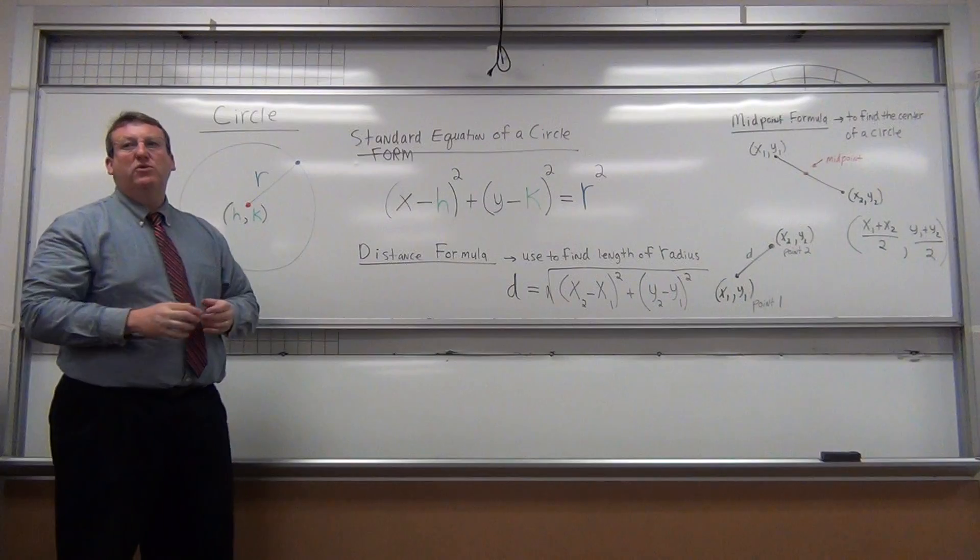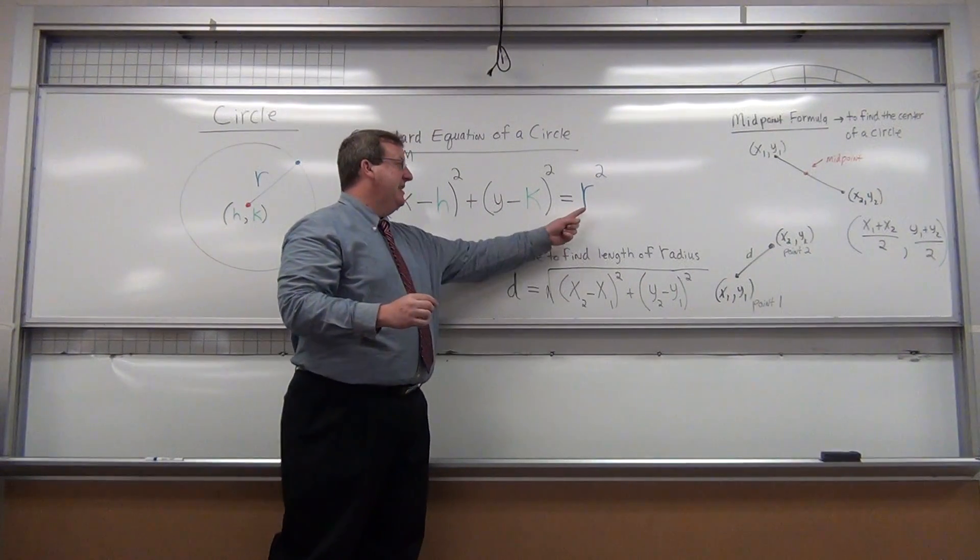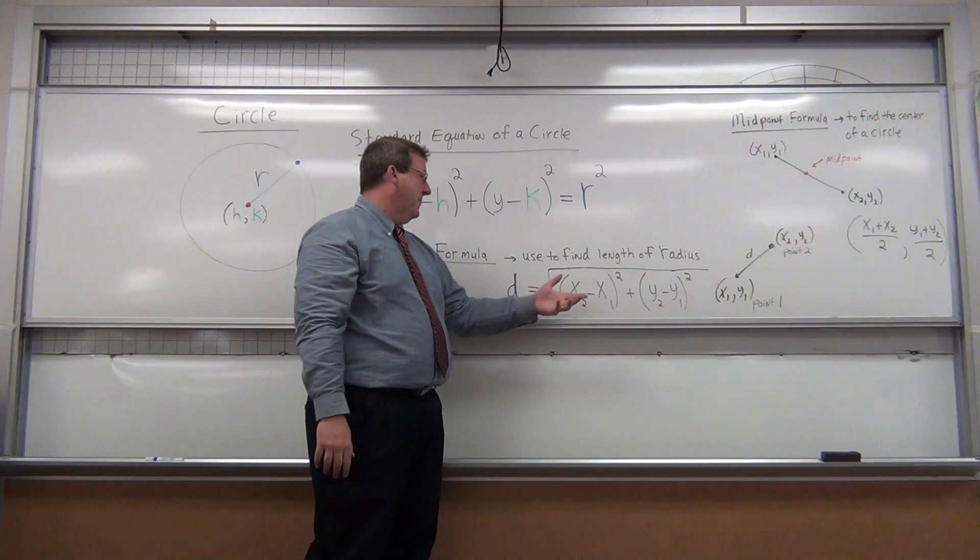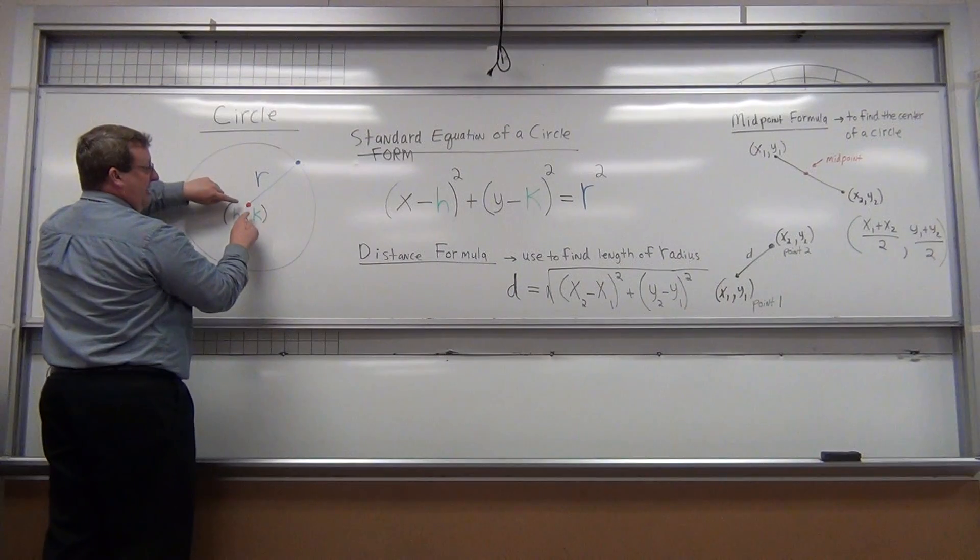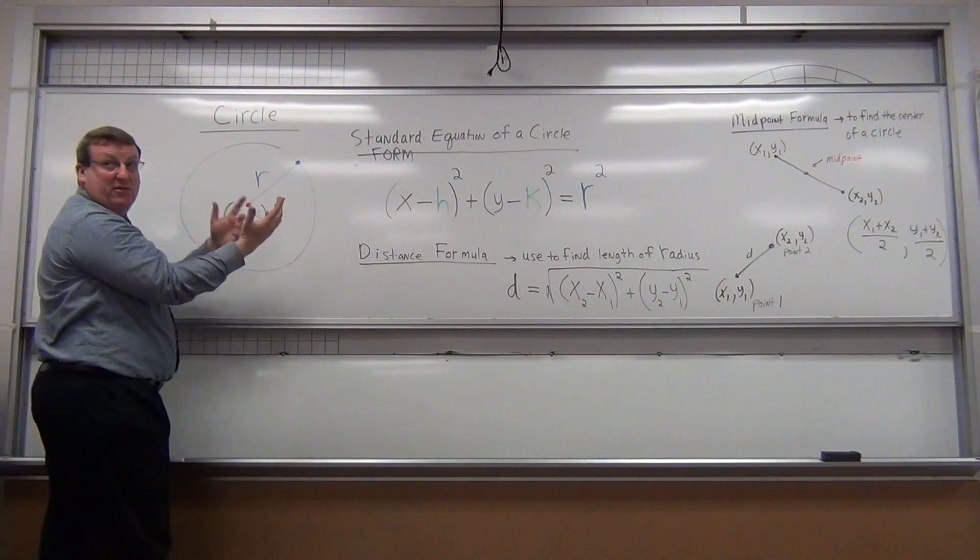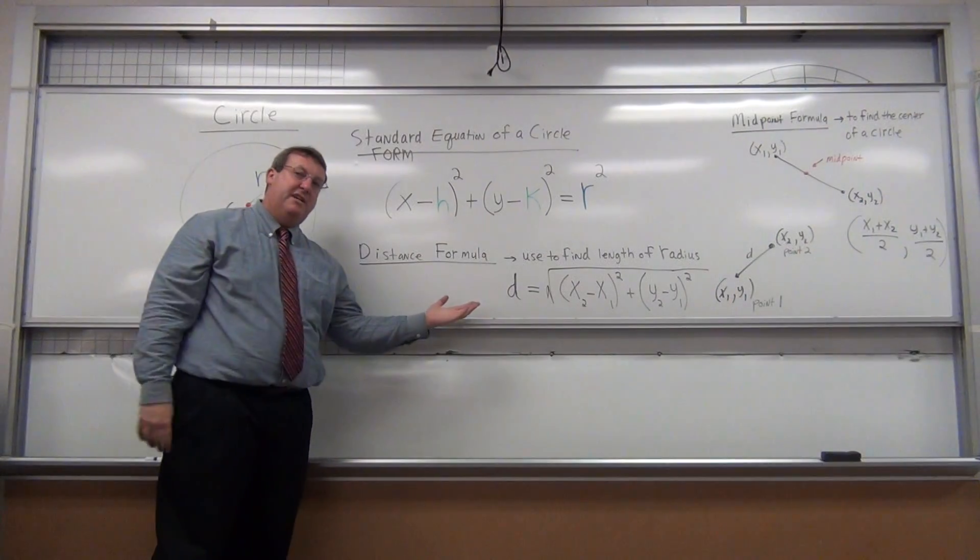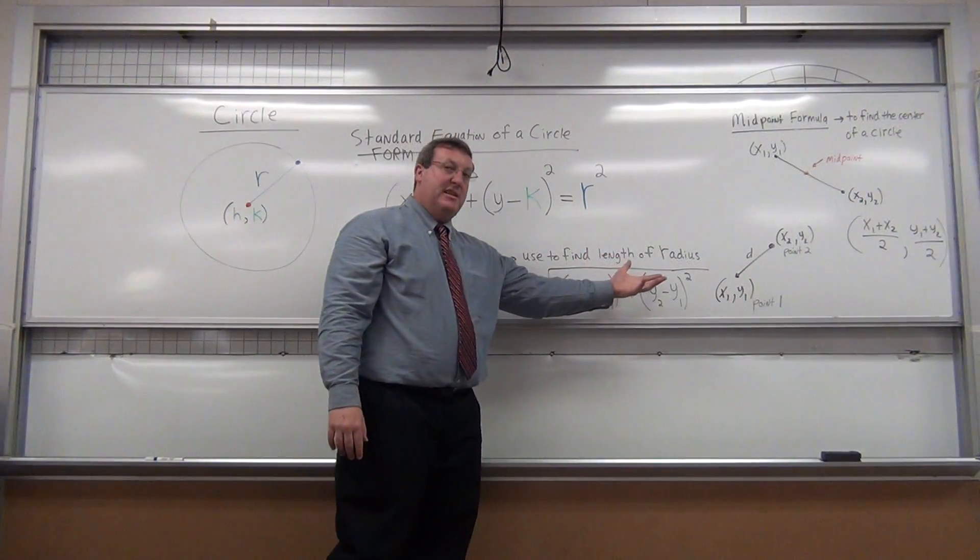Well, it turns out when we're doing a lot of geometry, we need to use some other formulas to get these two pieces of information. If we want to find the length of a radius, do you agree? You need to find the distance between the center and a point on the circle. Well, it turns out there's this handy formula called the distance formula.